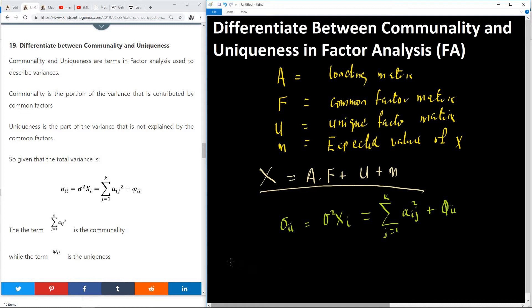The first term, for j equals 1 to k, aij squared, is called communality. This term is the portion of the variance that is contributed by the common factors.